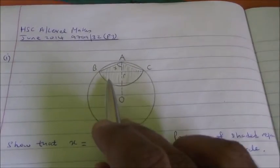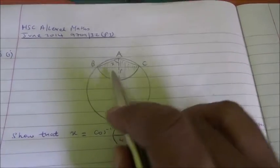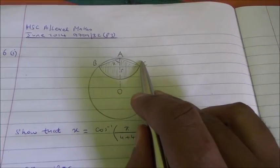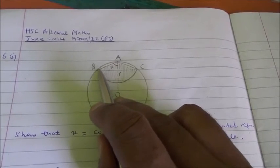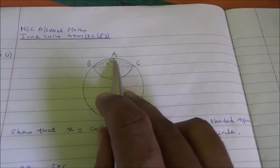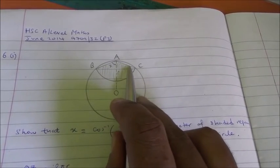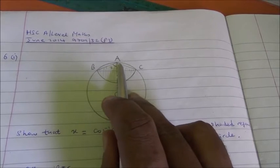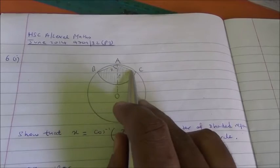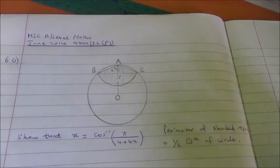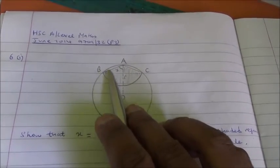For the shaded region, the perimeter consists of two straight sides and an arc. If you look at this carefully, this arc here can go on and make a circle, and this is its radius. We have to find the radius, and once we find it, it's going to be the same as AB and AC, because these are also the radius of the smaller circle. Then we use the radius and the angle to find the arc length, giving perimeter as radius plus radius plus arc.